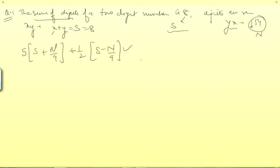So, my options are, we have to find the number. Options are 70, 71, 81, 91. Okay. So, what does the question say? Question says that the sum of the digits is 8.